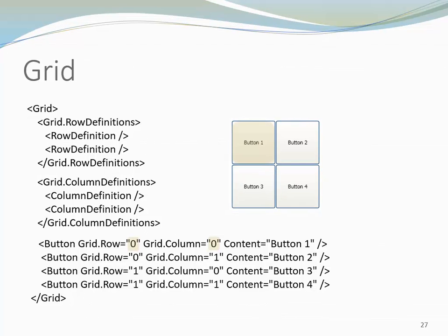Let's look at the first button. It is in row 0, column 0 — this is the top left quadrant. Let's look at button 3: same column 0, but different row — row 1. So this is on the left-hand side at the bottom. And button 4 is in row 1, column 1. This is the bottom right quadrant.